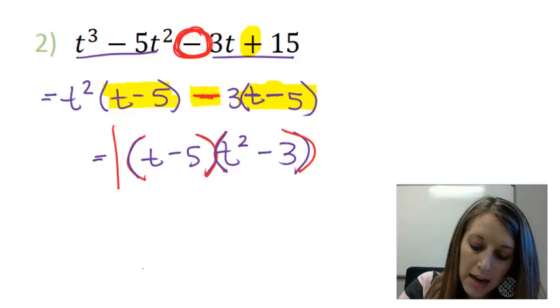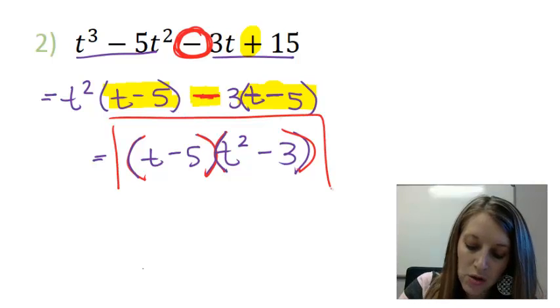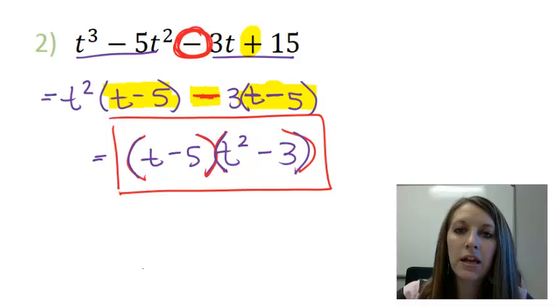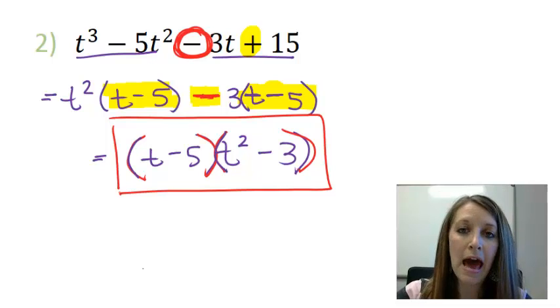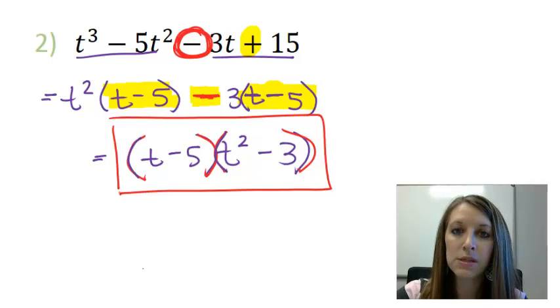In factor by grouping, you must have parentheses around both sets of factors as your final answer. And again, if you want to check this, you can do so by multiplying it out or FOILing in this specific example.